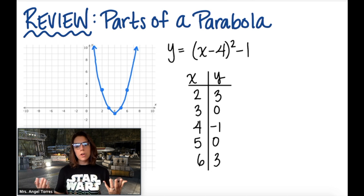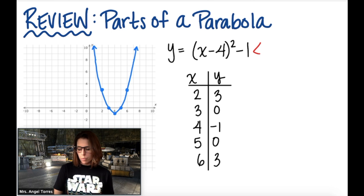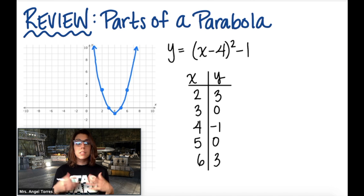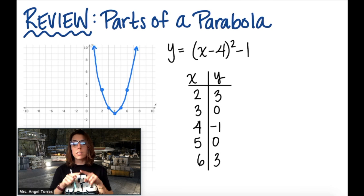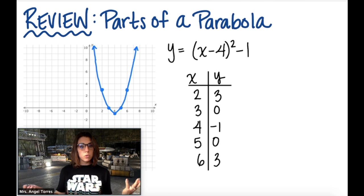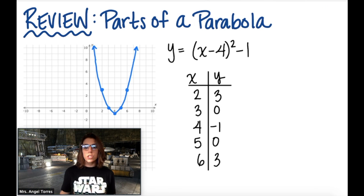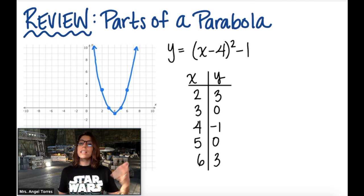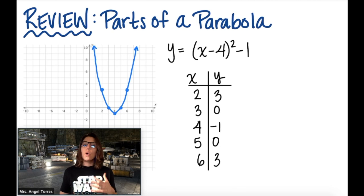The first thing we're going to do is a quick review on the parts of a parabola. So when you're given a quadratic function like the one I gave you right here, the solutions form what's called a parabola, or this U shape. And this happens in quadratic functions because when you square a number, it's going to produce two outputs. When I square negative 1 and 1, they both give me an output of 1. When I square negative 5 and 5, they both give me an output of 25.